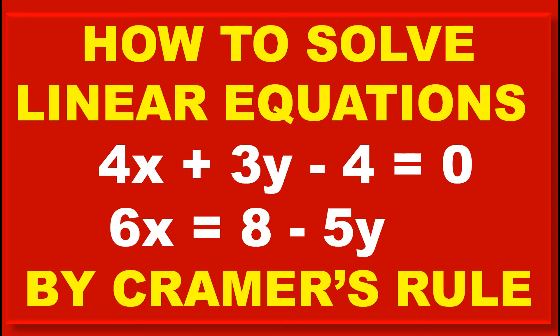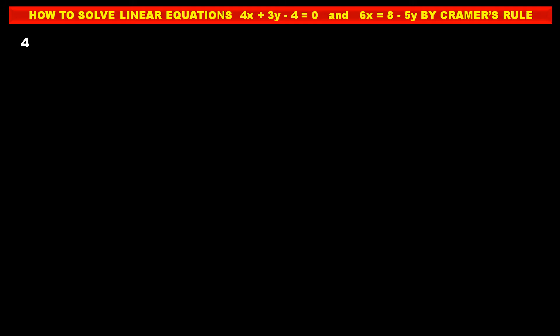Friends, don't forget to subscribe to our channel to get our new coming videos. The equations are: 4x plus 3y minus 4 is equal to 0, and 6x is equal to 8 minus 5y. These are the given two linear equations.